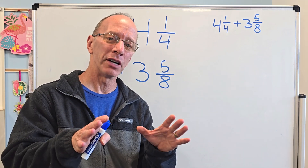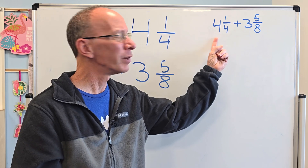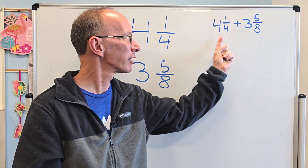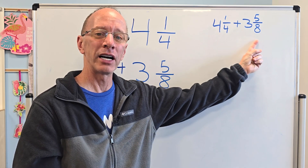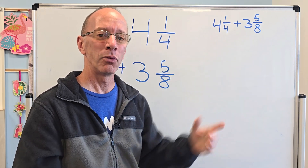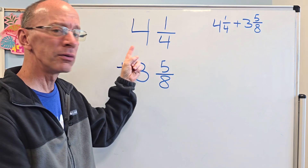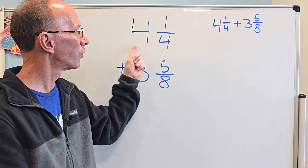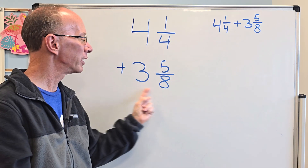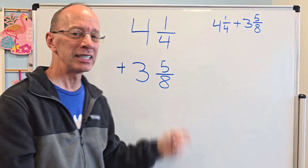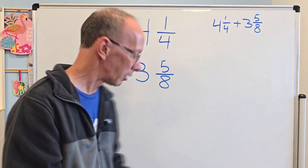Now, sometimes when you're at school, you get these problems and they're written like this — like 4 1/4 plus 3 5/8. What I like to do is rewrite it. So I put 4 1/4 right here and then 3 5/8. It's just easy for me to work this out.